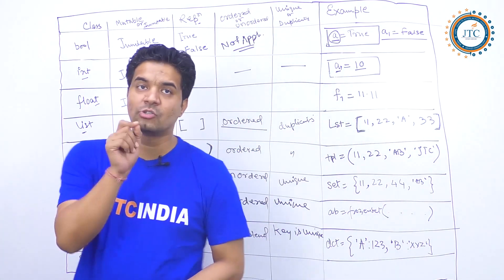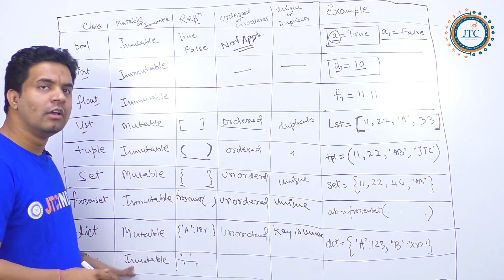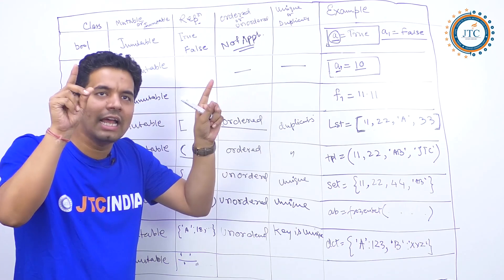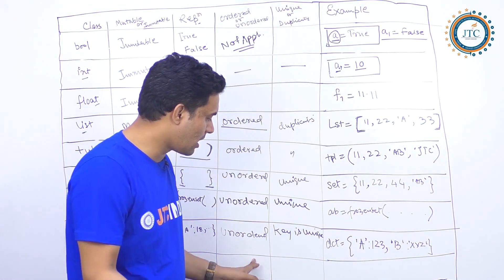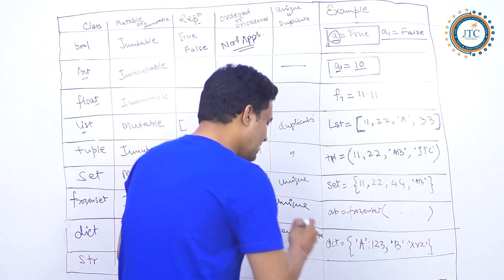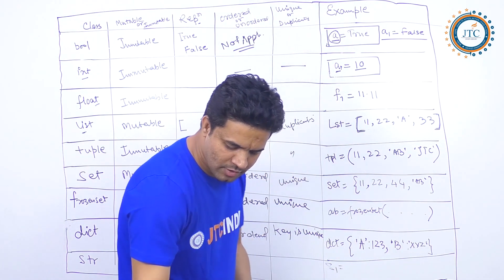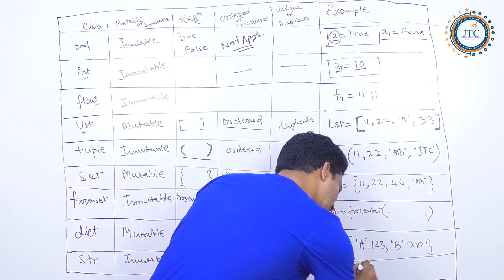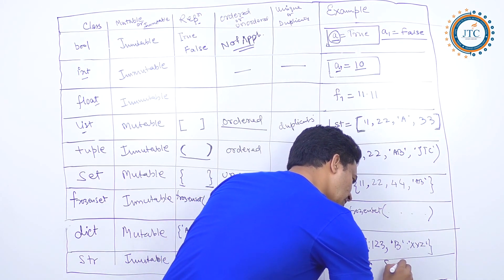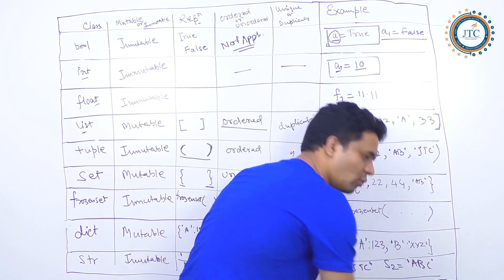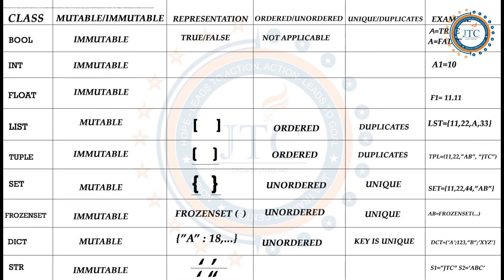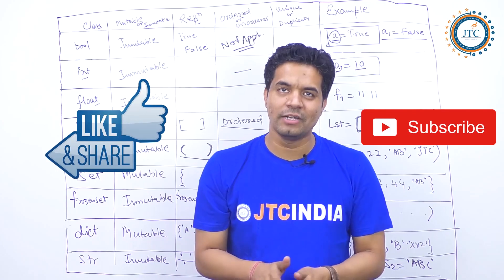String is immutable. You can represent a string in either double quotes or single quotes. For example, `"JTC"` or `'abc'` — both are valid. There is no ordered/unordered or key discussion for string. If you have any questions related to Python data types, mutability, or immutability, write them in the comment box. We'll be making more videos — share, subscribe, thank you.